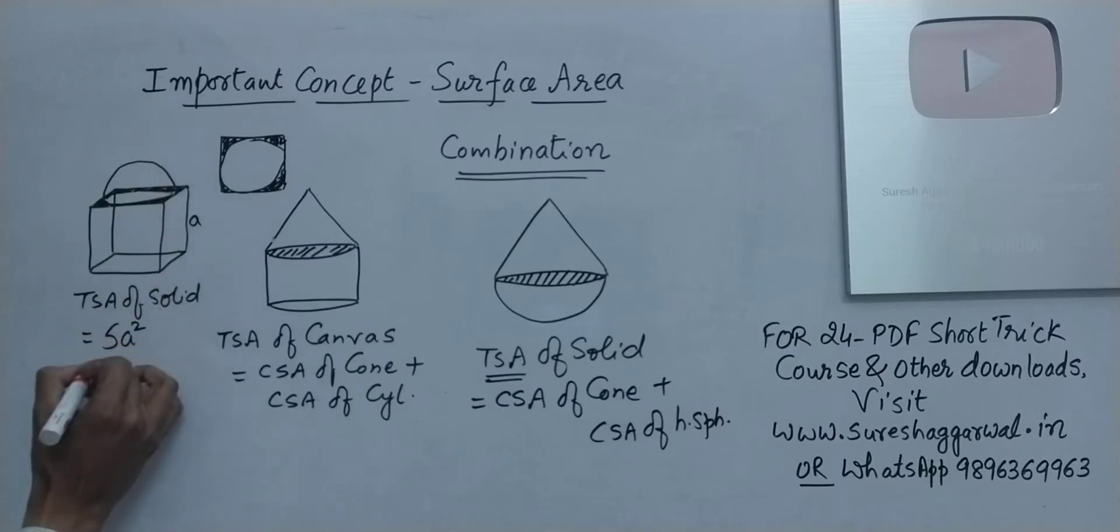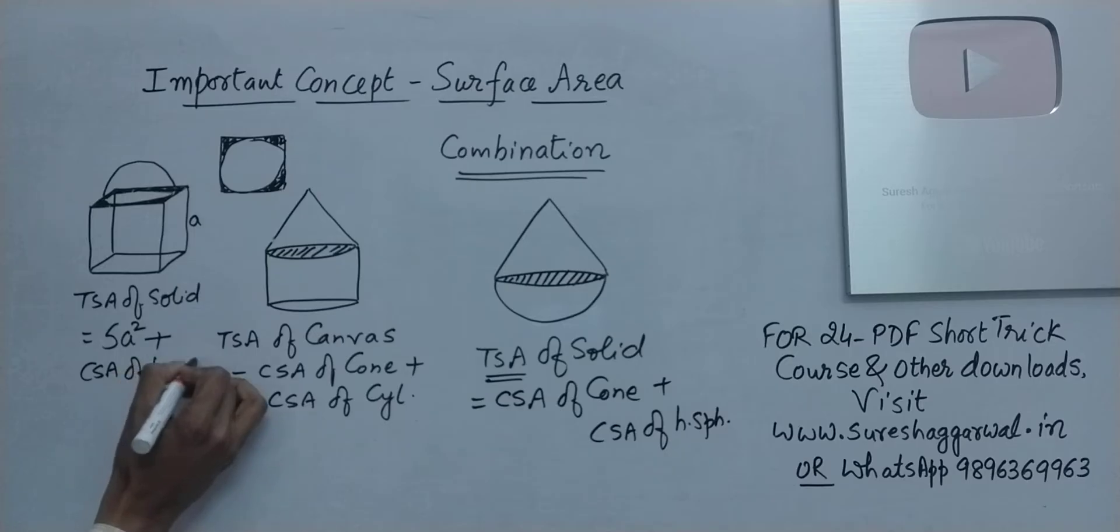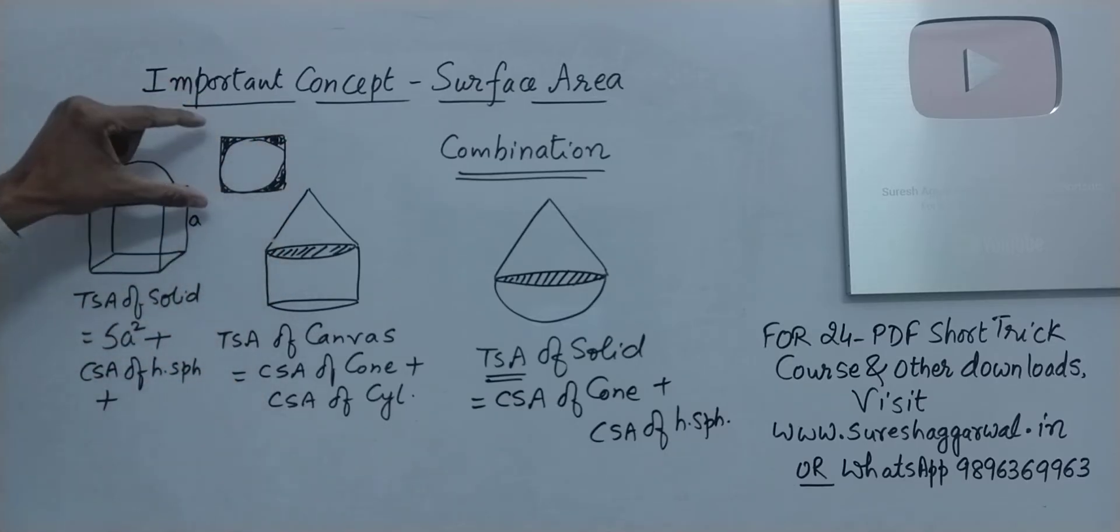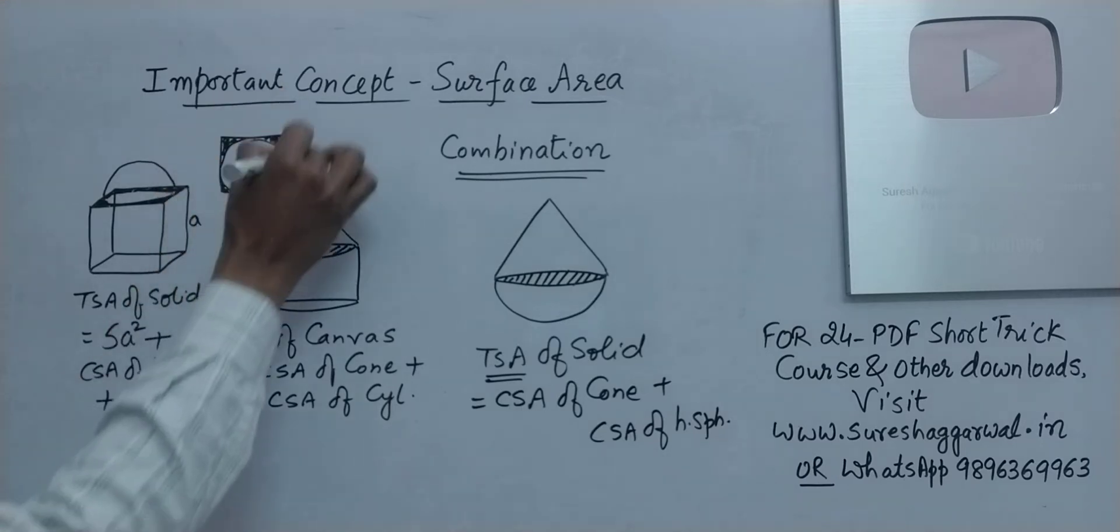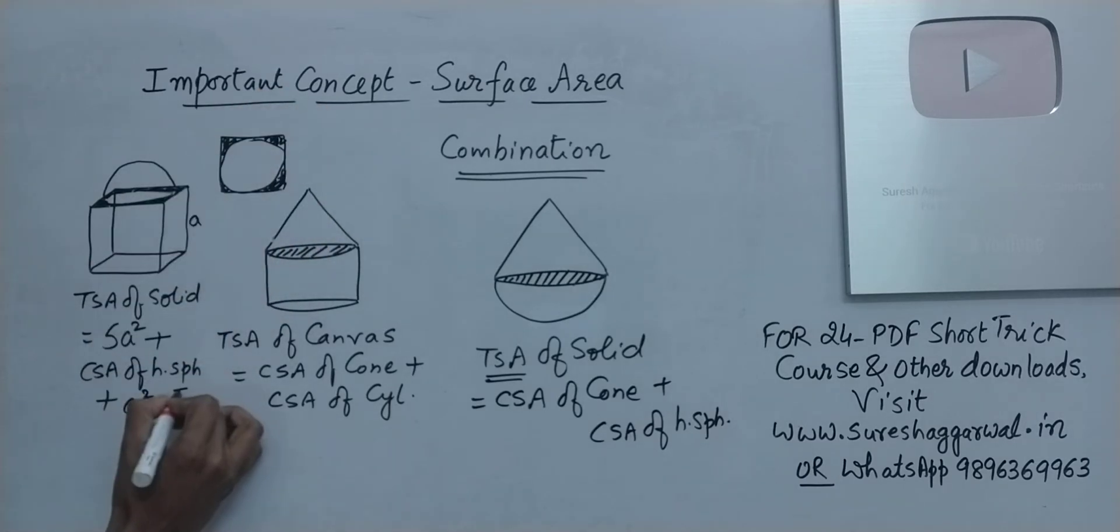And what about the hemisphere, the curved surface area plus the CSA of hemisphere and plus now the corners. For finding the area of the corners, you need to take the area of the square and subtract the area of the circle from that. So basically this is a square which is the area of the square and minus pi r square which is the area of the circle.